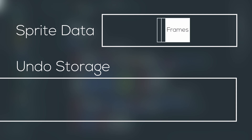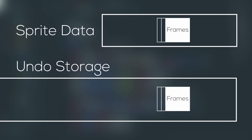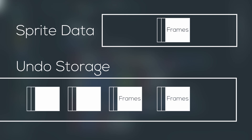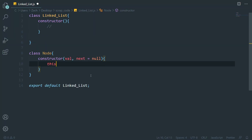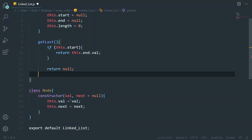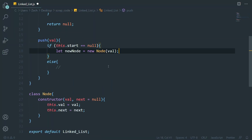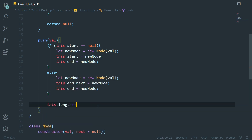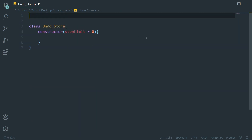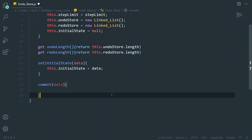Currently this copies the sprite data — frames and all — into the undo store. This shouldn't be a huge problem with a 16 by 16 sprite system, but if it does start to take up too much memory there are some easy optimizations I can add. I figured a linked list would be good for this, so I spent a couple of minutes programming a linked list class and used that to create an undo store class, which is going to handle moving states around between undo and redo lists.